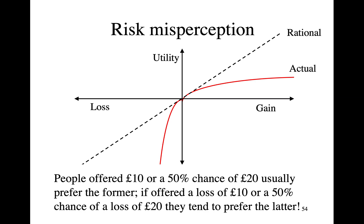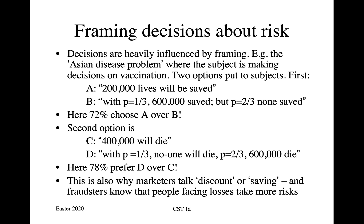On the other hand, if you offer people a loss of 10 pounds versus a 50% chance of a loss of 20 pounds, they tend to prefer to gamble on the larger loss. This has been tested very thoroughly. To test reaction to a loss, experimental subjects are given 20 pounds or two coffee mugs, and then told: we'll either take away 10 pounds or give you a 50% chance of taking away 20 pounds. Consistently, people prefer to gamble when facing losses. You can graph this out — the red curve shows the utility that people actually ascribe to gains and losses in these circumstances.